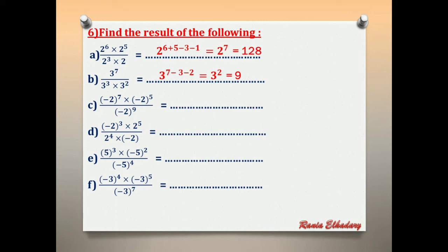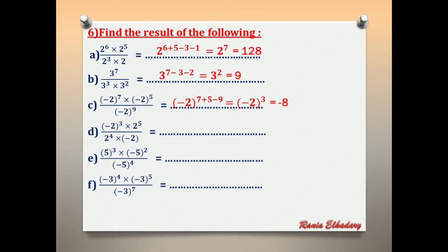Letter C: (negative 2)^7 × (negative 2)^5 over (negative 2)^9. Same base — add powers in numerator, subtract denominator: (negative 2)^(7+5−9) = (negative 2)^3. Power is odd, so the answer is negative. (negative 2)^3 = negative 8.